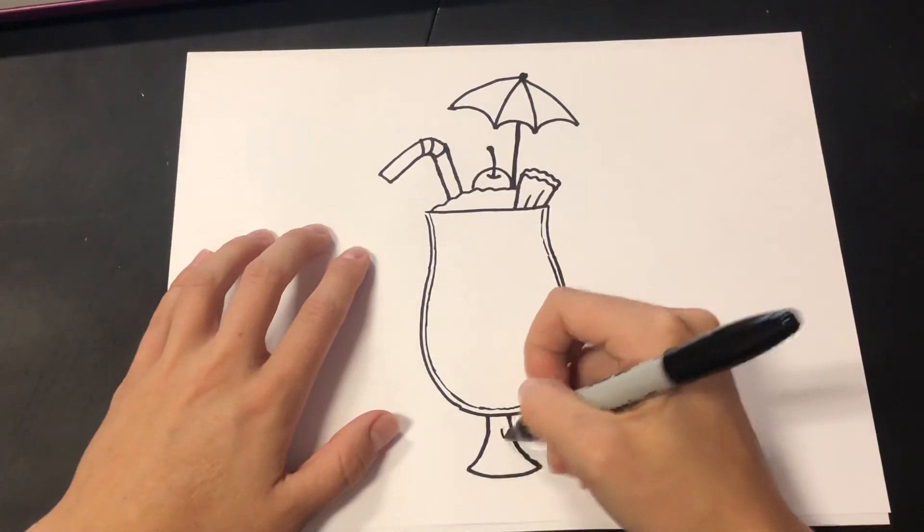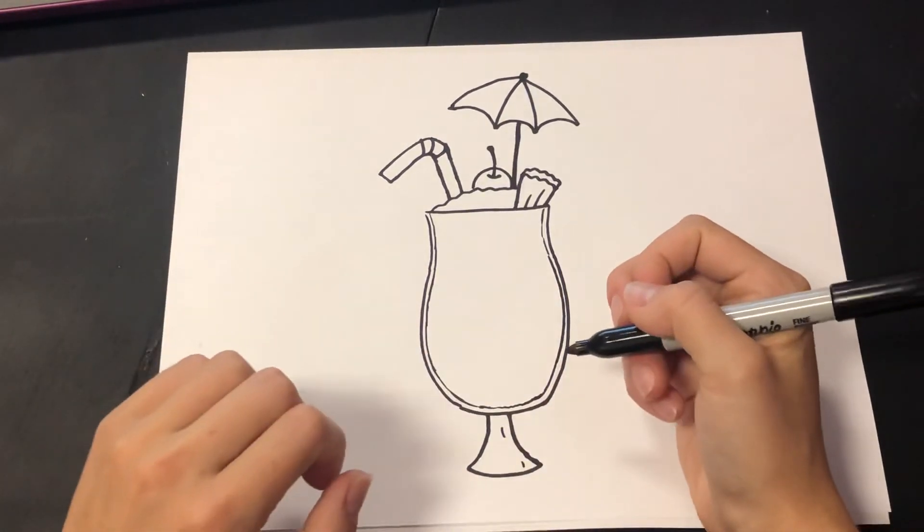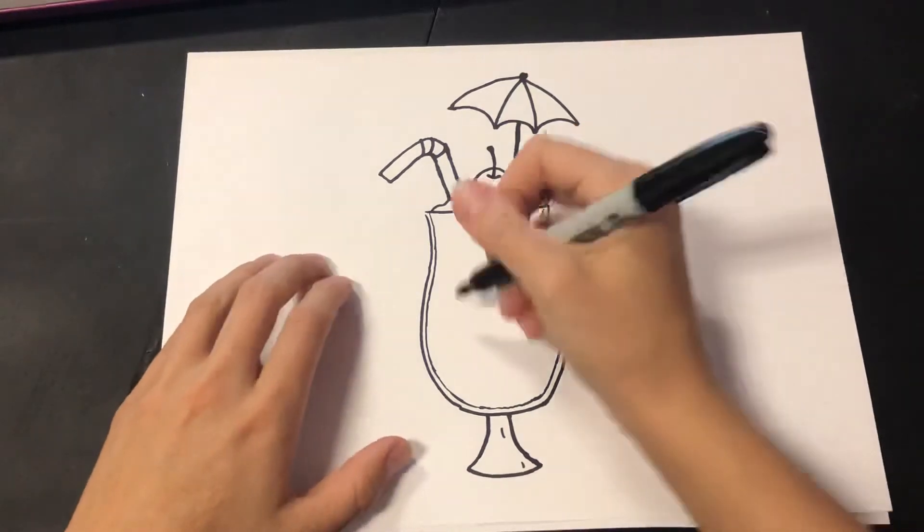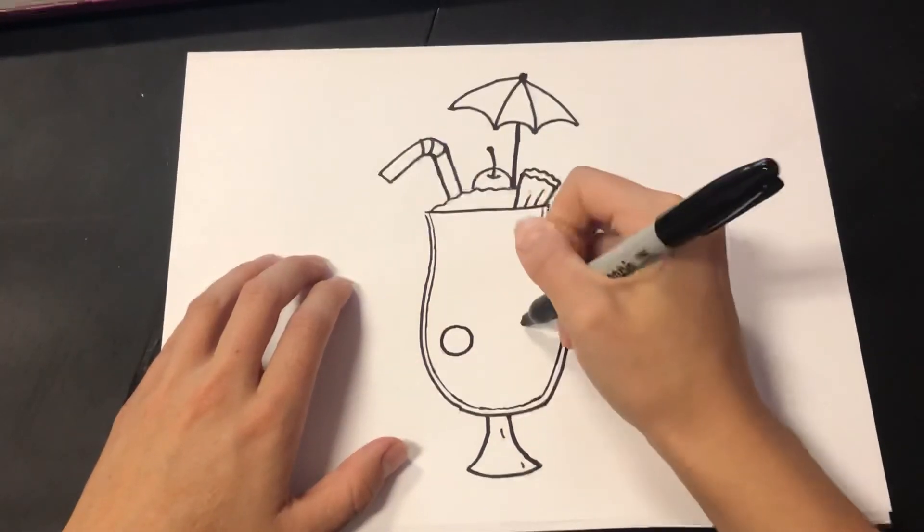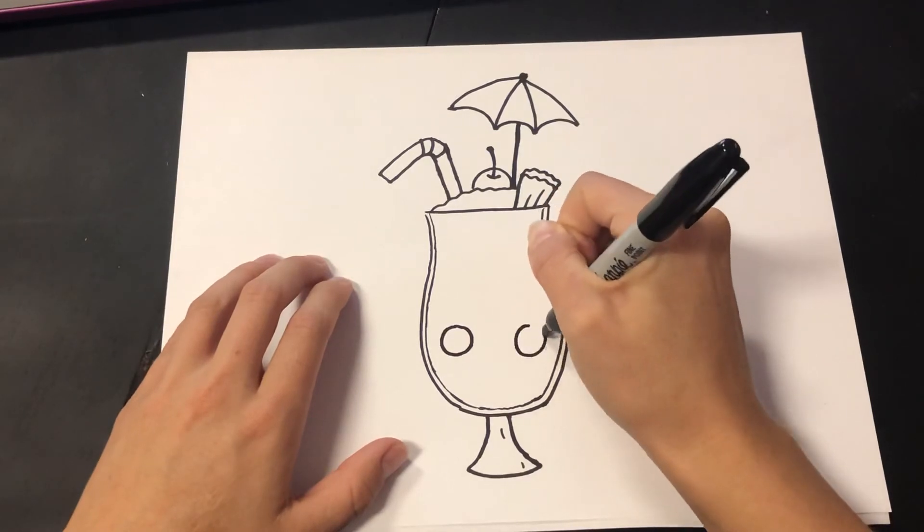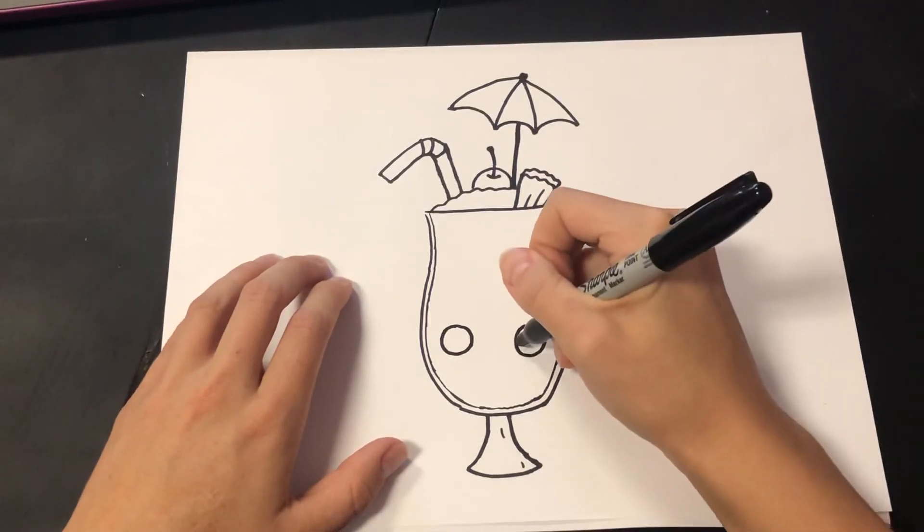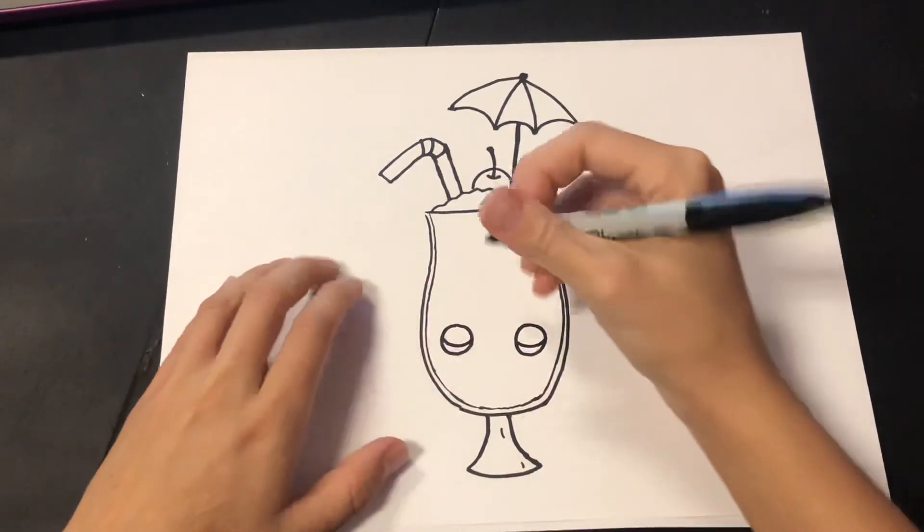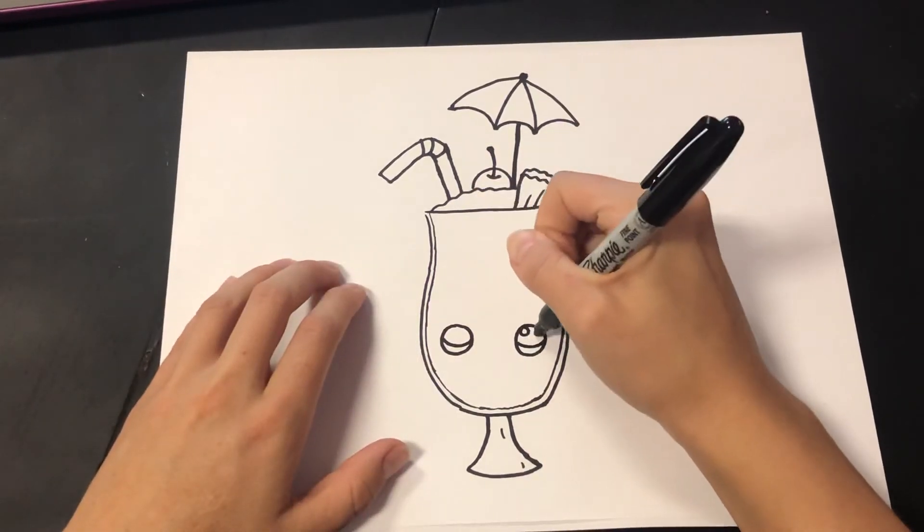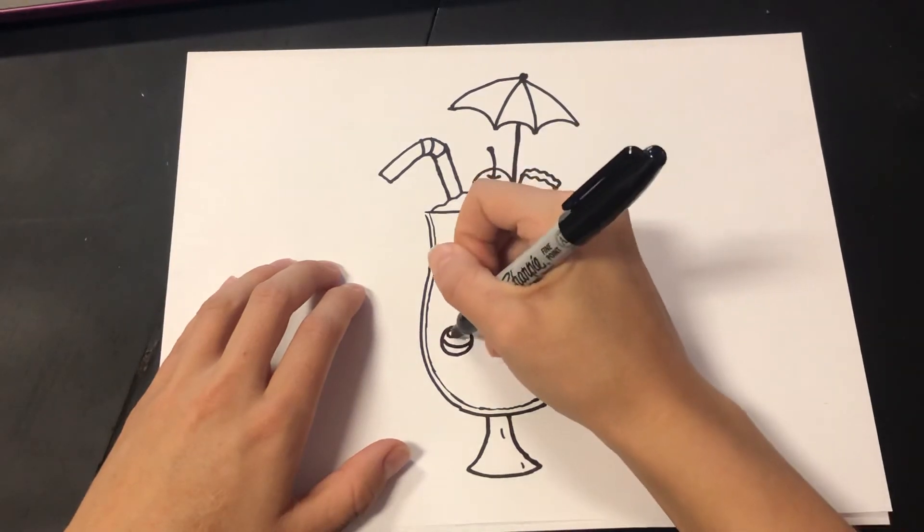And like Draw So Cute, we're going to add a cute little face. That is optional—you do not have to do a face—but I'm going to because I think it's adorable. So I'm going to do two circles. And Draw So Cute has some signature cute eyes, so they do little half moons.